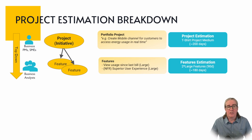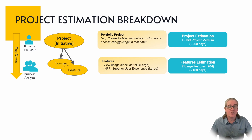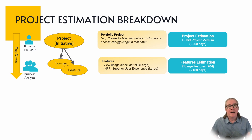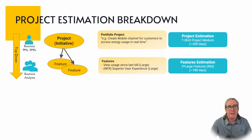Then you would break those down into features. Here maybe we've got two features: a 'view usage since last bill' feature — maybe that's a large — and then a non-functional requirement for a superior user experience, which is also a large. Maybe in this organisation features are 90 days each, so two of those gives you 180 days — a little bit less than the initial estimate, but you've got a bit more information that's come into the project.